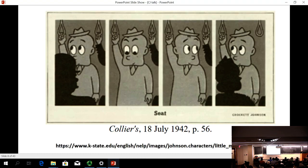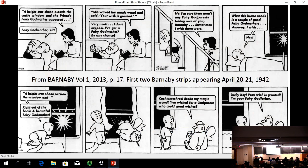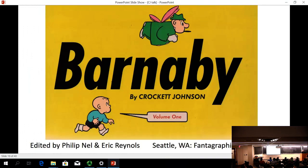His word list strip, Little Man with the Eyes, appeared in Colliers from March 1940 until January 1943. C.J. met his future wife, Ruth Krause, in 1939, and in 1941 they left New York and moved to Darien, Connecticut. That is where C.J. developed the comic strip, Barnaby, that would debut in April 1942.